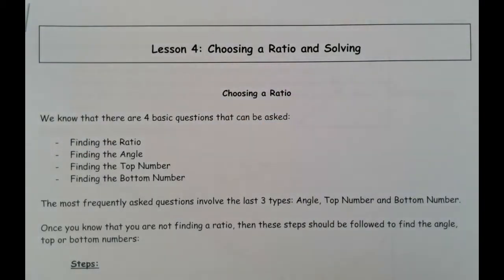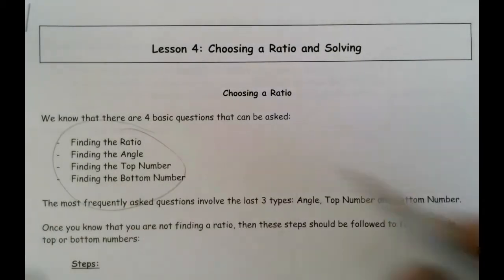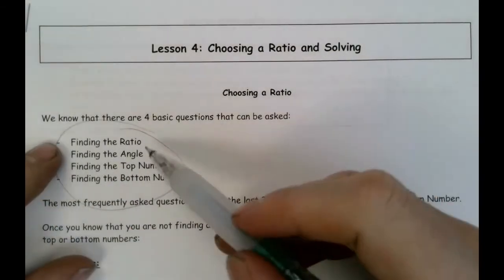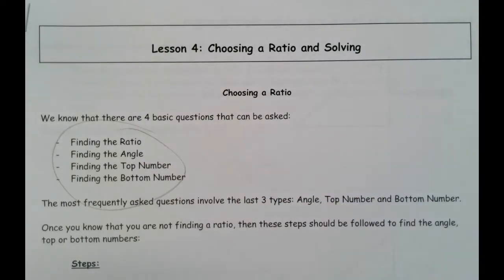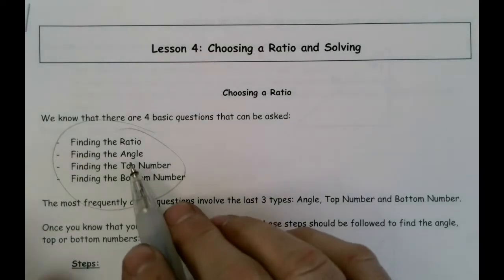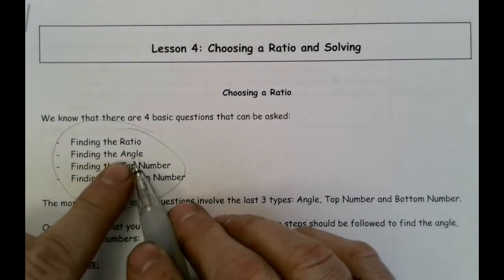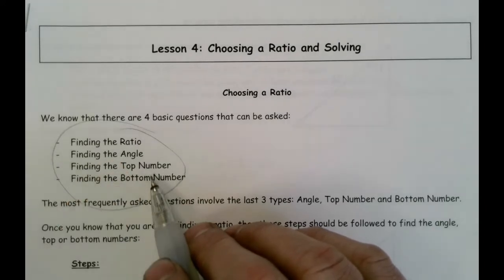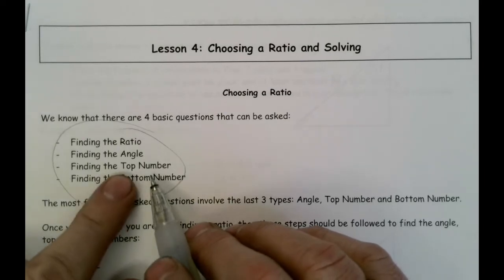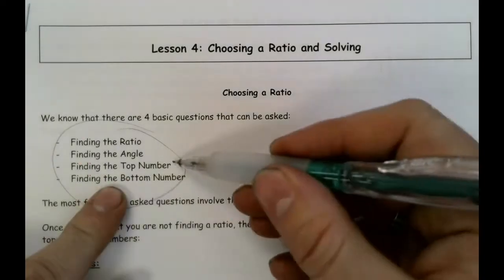Remember what we had done in the last couple of lessons — there were four basic questions we were trying to address. First, we were trying to look for the trig ratio given an angle, to find the ratio that goes along with the sides of the triangle. Or we take the ratio and go back to figure out what the angle is. Then, once we've got our trig functions down, can we use those to find missing parts of the ratio — the numerator or the denominator?